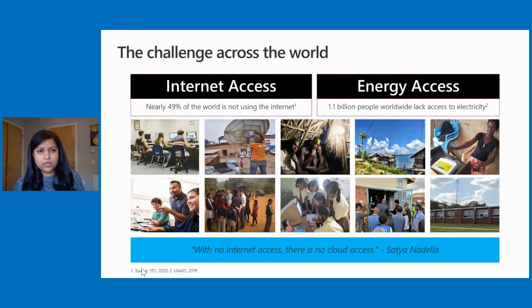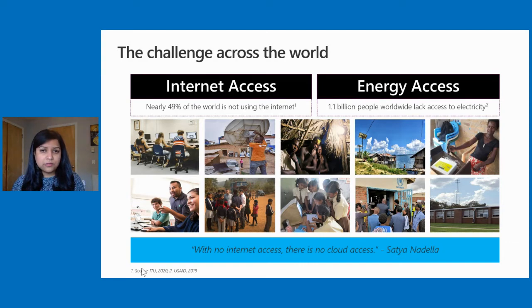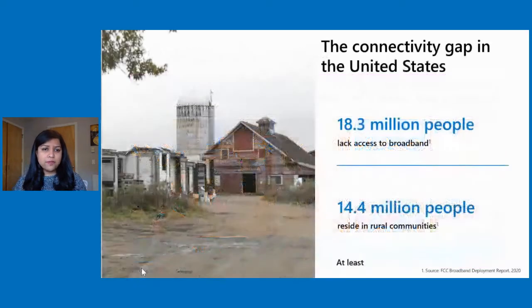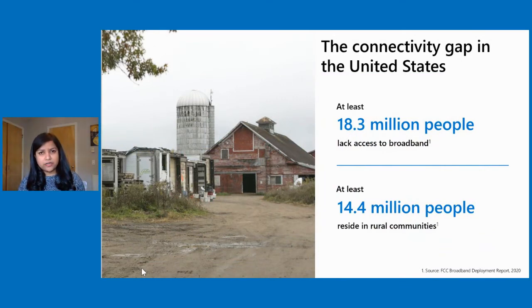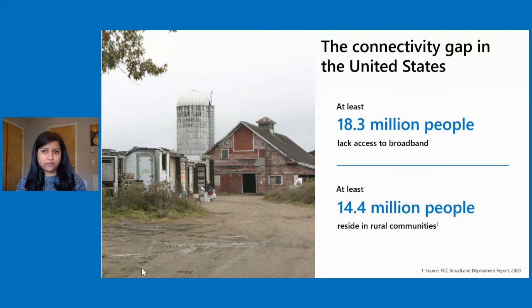Nearly half of the world's population still does not use the internet, and there's a significant gap in the number of people that lack access to electricity, which is the backbone for most broadband infrastructure. In the U.S. specifically, FCC data shows that at least 18.3 million people — over 14 million of whom reside in rural areas — lack access to broadband. And there is very strong evidence from independent datasets from Microsoft and Broadband Now that the percentage of Americans without broadband access is actually much higher than the figures reported by the FCC.